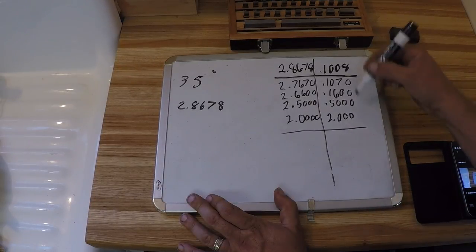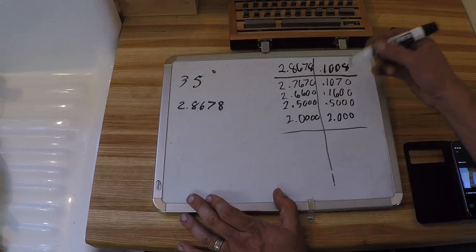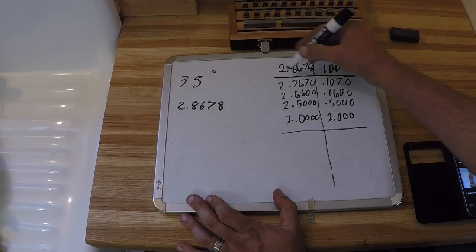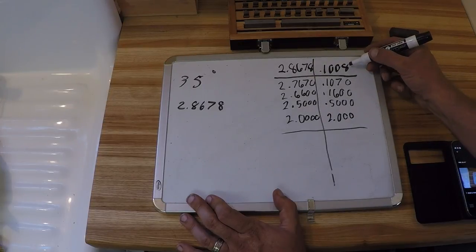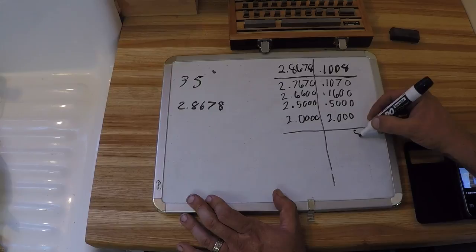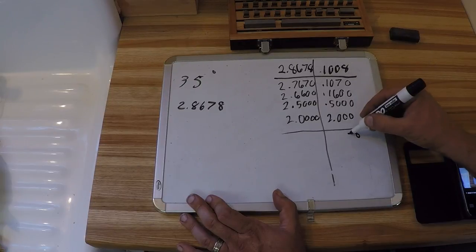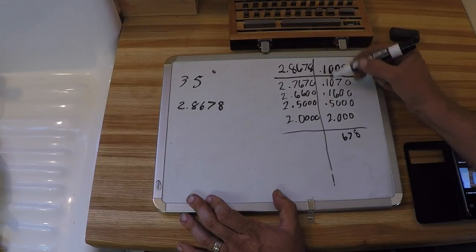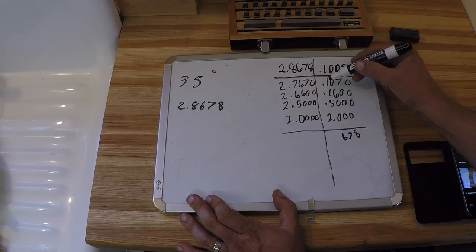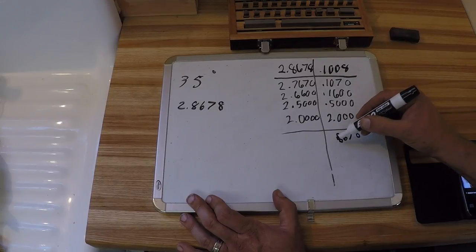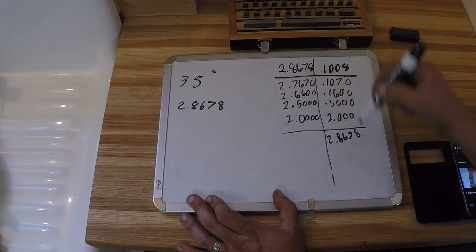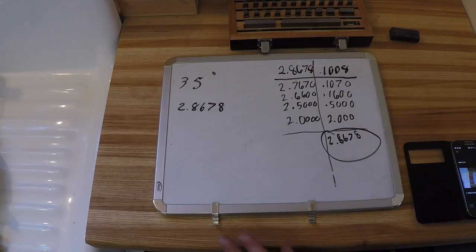I almost forgot a step here. I put in all my zeros just to make for a little bit easier math. To prove that I actually have the right ones to get this number, we're going to add these values up. So we have the 8 tenths, there's 7 thousandths, the 60 thousandths mark, and then here we have 5, 6, 7, 8, and 2 inches. So 2.8678, and that matches up here. So that means this is the right answer.